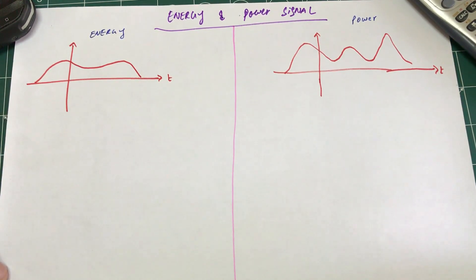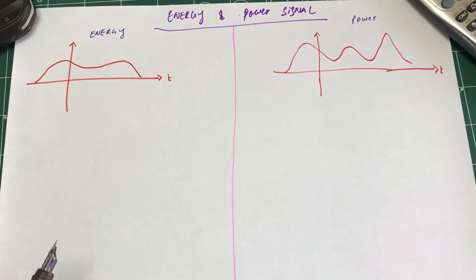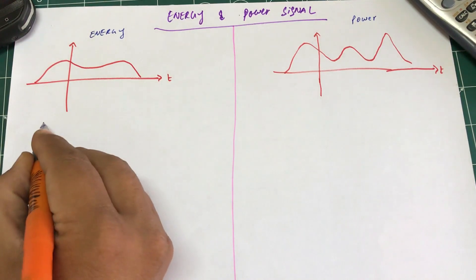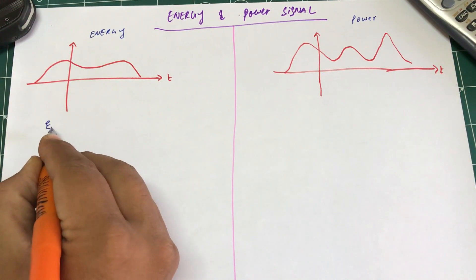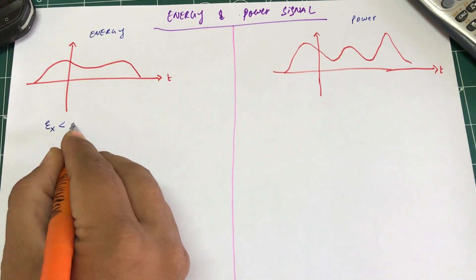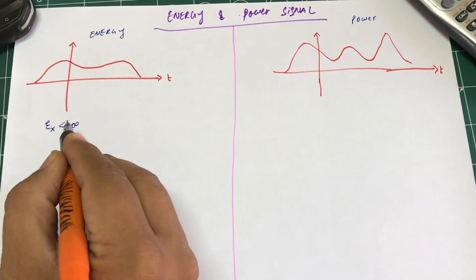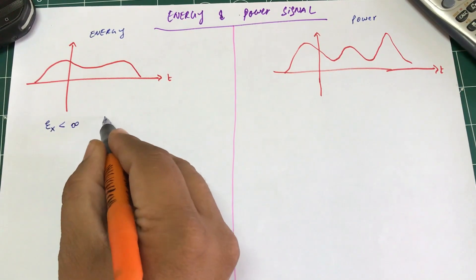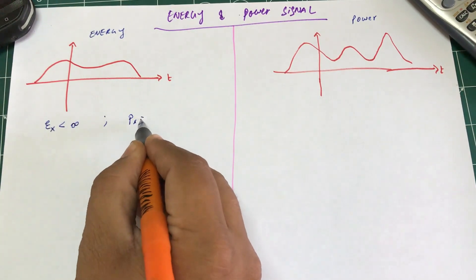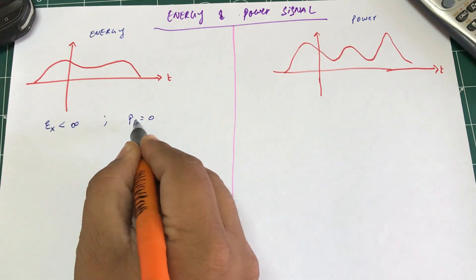In an energy signal, the key thing to remember is that the energy Ex is going to be finite, but the power is going to be zero.